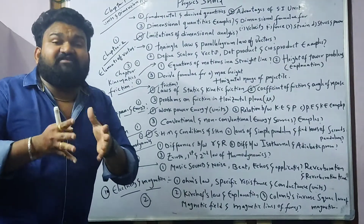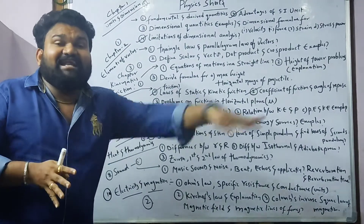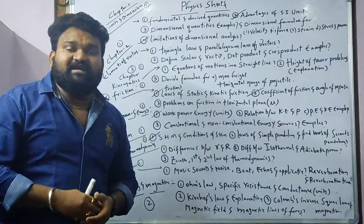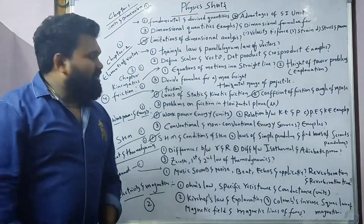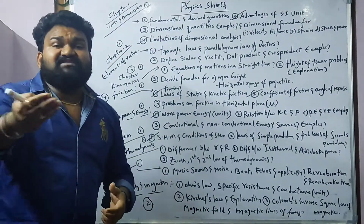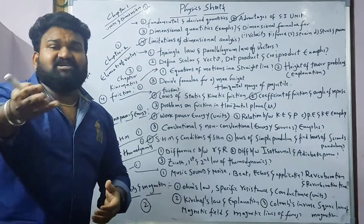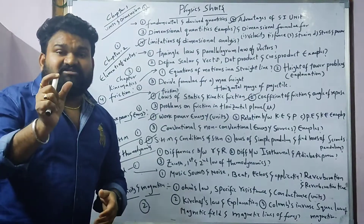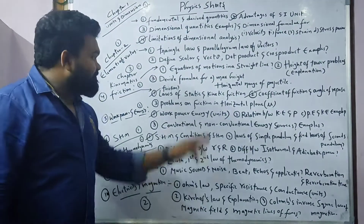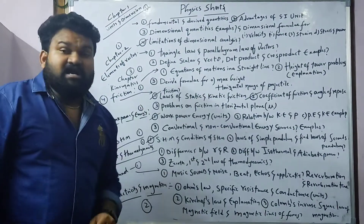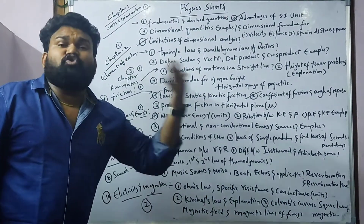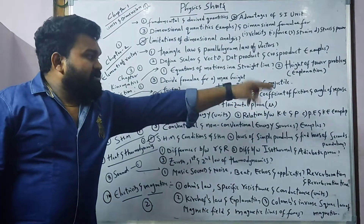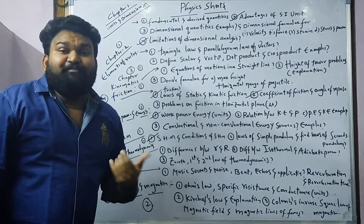Coming to the friction chapter: what is friction, and what are the examples of friction in daily life? Laws of static friction and laws of kinetic friction. Next, what is the coefficient of friction (mu) and what is the angle of repose?